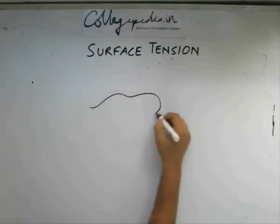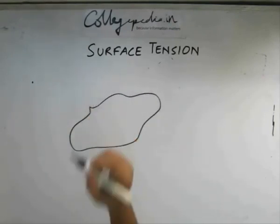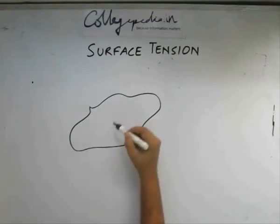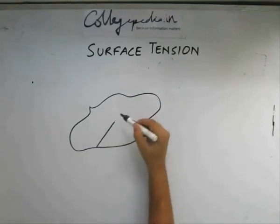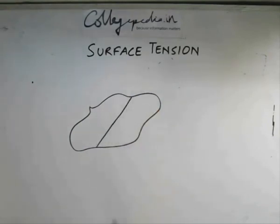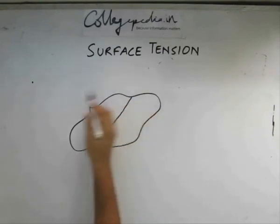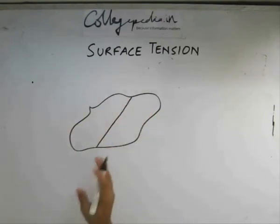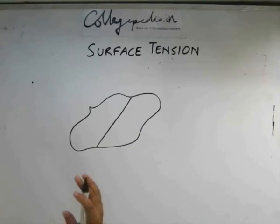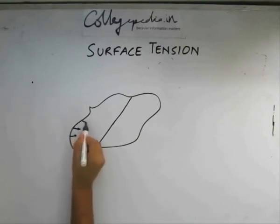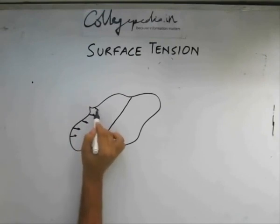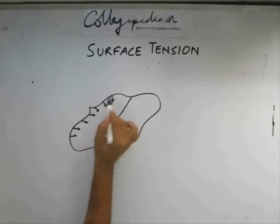Say we have an arbitrarily shaped surface here. Let's consider a line of atoms in this fashion. If this wants to reduce its surface area, what needs to be done is all the molecules at the interface here will try to come towards the bulk.